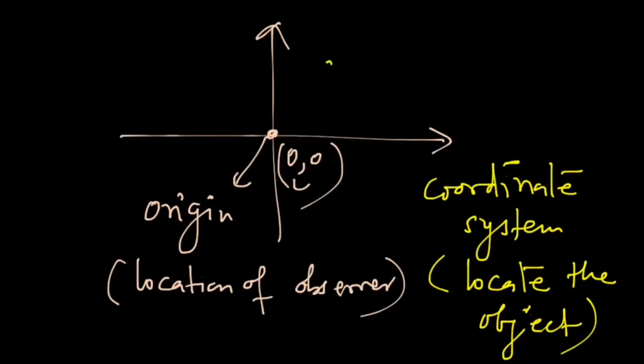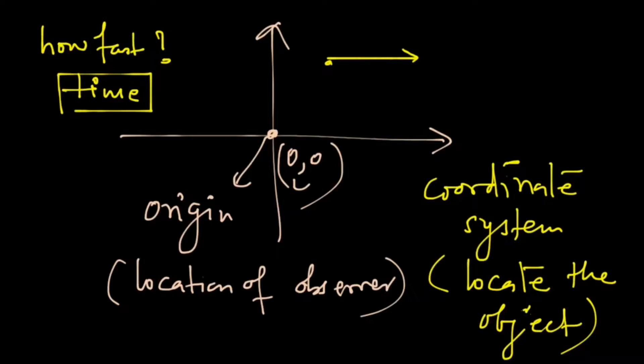And we need this system to locate the object and object's position. Only measuring the position is not enough because the object will be moving. And so we are interested in finding out how fast something is changing. And for that, we need to measure the time.